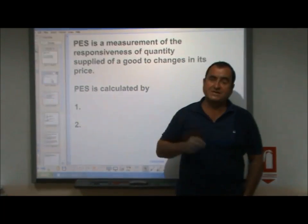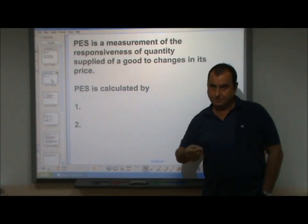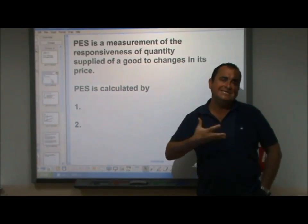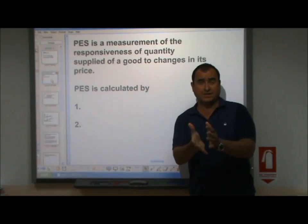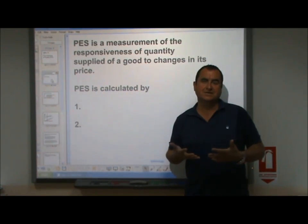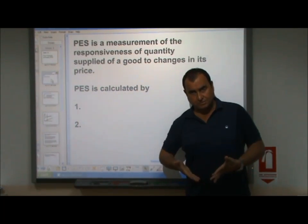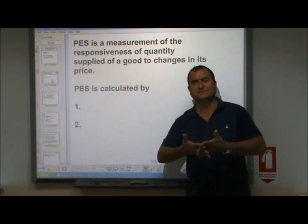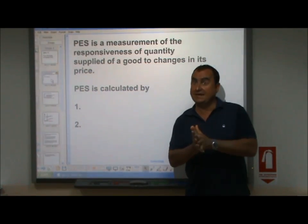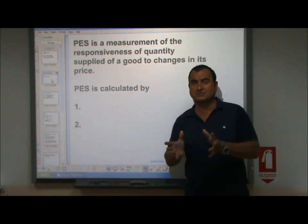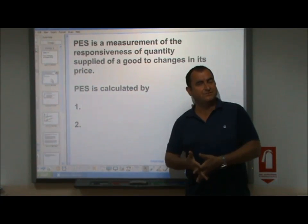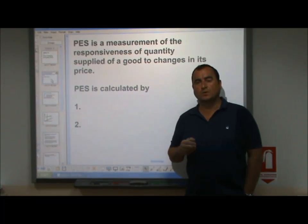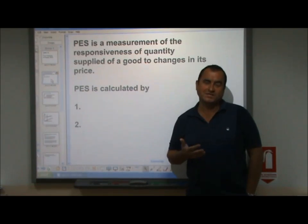Price elasticity of supply is a measurement of the responsiveness of quantity supplied of a good when its price changes. When the price of a good changes, how easily can suppliers react? We know that suppliers want to supply more of a good when its price rises, and less when its price falls — that's the upward sloping supply curve. But how quickly are suppliers able to react when the price changes? That's what PES is about. If they cannot react quickly, we say the good has inelastic supply. PES always comes out positive — there are no negative values.